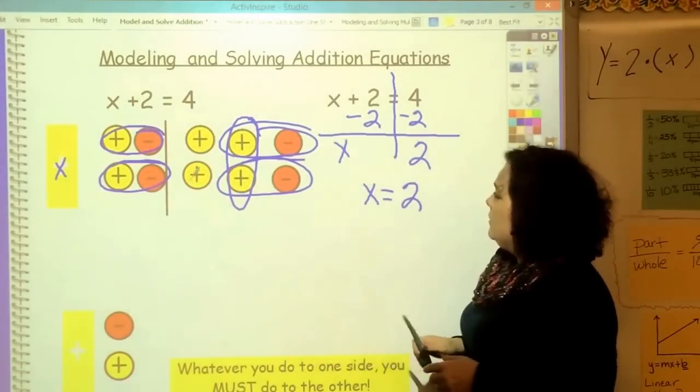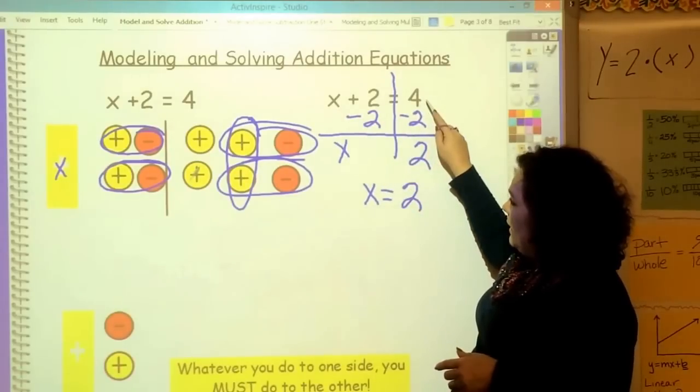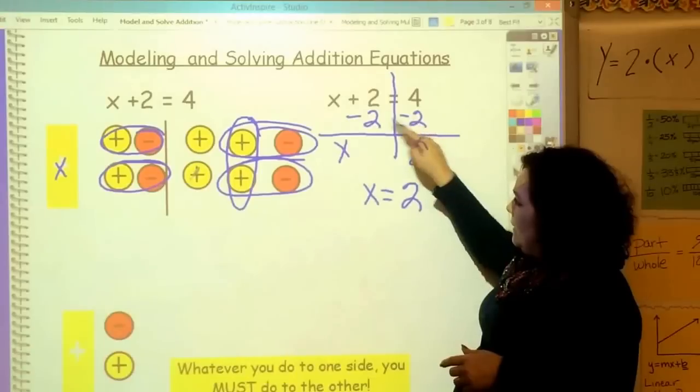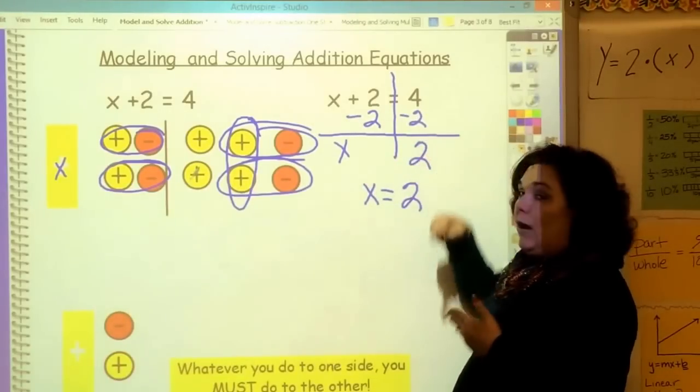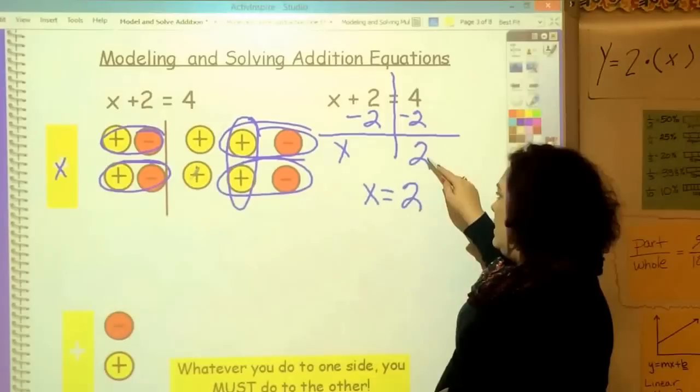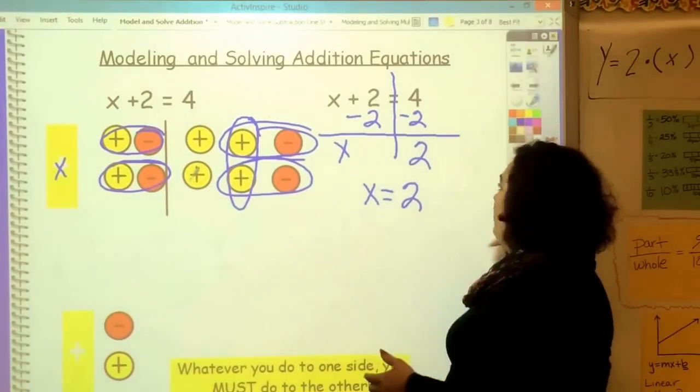Look at what I did again. I kept this line. I subtracted 2 from both sides, brought down my x. And then 4 minus 2 or add a negative 2 is 2. And x equals 2. That's the whole process of what's going on.